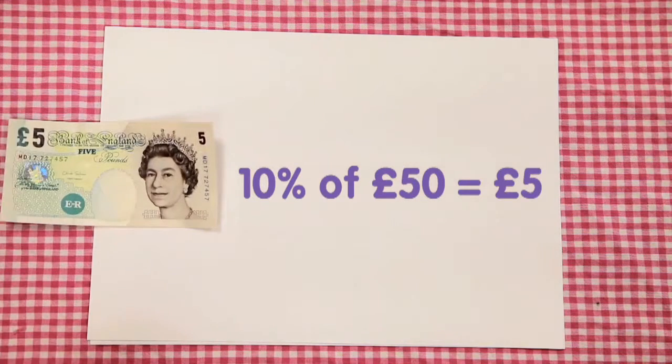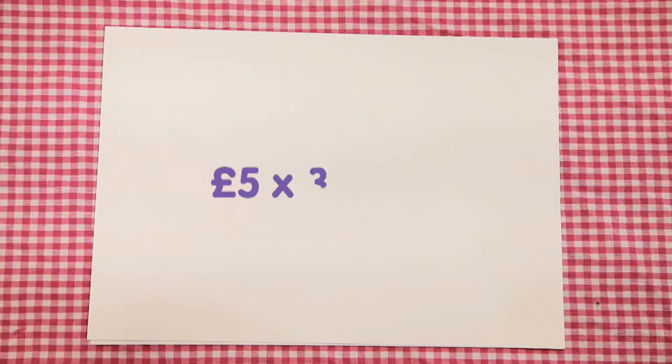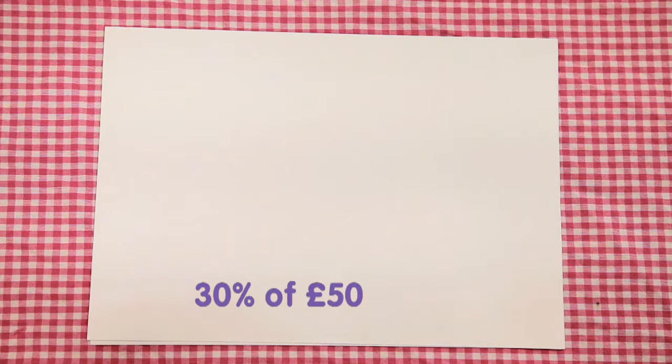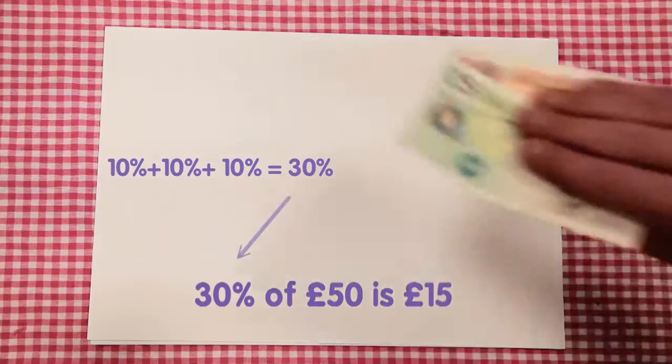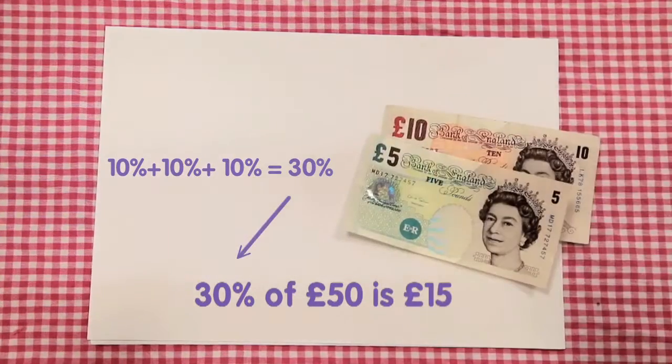So to get 30%, we need to multiply 5 pounds by 3. Therefore, 30% of 50 pounds is 15 pounds.